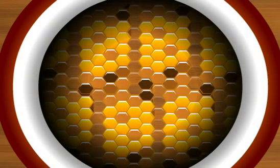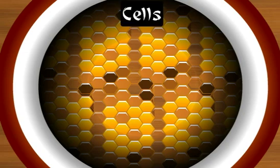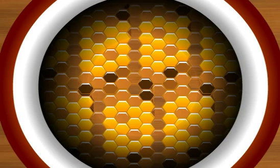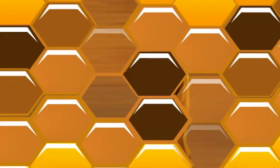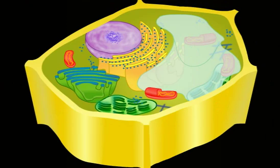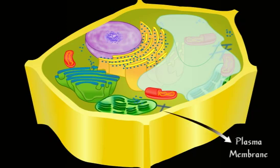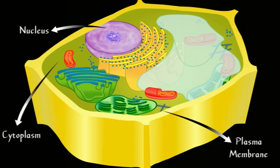he saw that the structure resembled a honeycomb with a great many little boxes. He named these structures as cells, a Latin word for a little room. Have you ever wondered what a cell is made up of? A cell is made up of special components called organelles. The basic organelles present in almost every cell are plasma membrane,